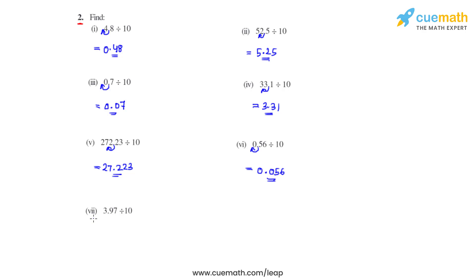Coming to the last bit of this question, which is the seventh bit, we have 3.97 divided by 10. So the decimal must move one place towards the right, and the answer becomes 0.397. And this is how we solve this problem.